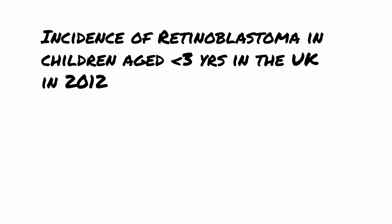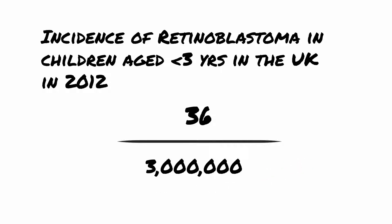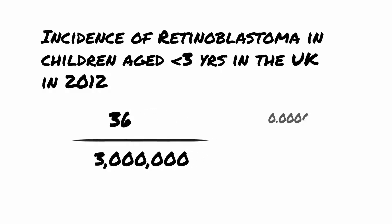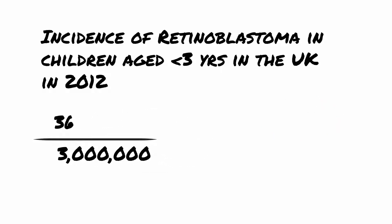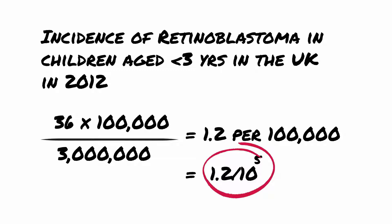Let's look at how to calculate incidence through an example. Using the 2011 UK census, we know there are approximately 3 million children aged 0 to 3, and in 2012 there were 36 cases of retinoblastoma amongst UK children in this age group. To calculate incidence, we divide 36 — the number of new cases — by 3 million, the at-risk population. This gives 0.000012. To make this a number greater than 1, we multiply 36 by 100,000 and divide by 3 million, giving an incidence of 1.2 per 100,000 children in the first three years of life in the UK in 2012.